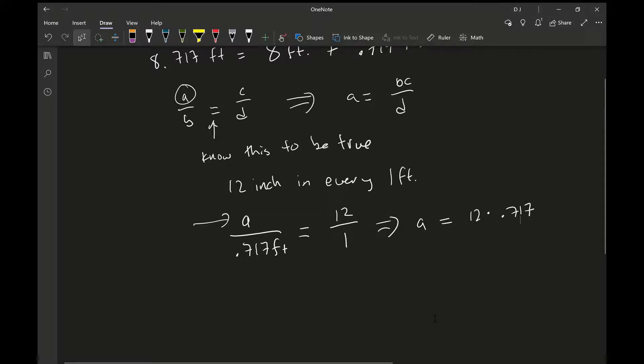So broke out the calculator and I get a is equal to 8.604. So we know then our original question: 8.717 feet should be the same as 8 feet plus 8 inches.